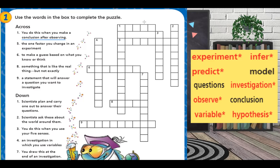Let me draw an arrow for you. Over here. Can you see? From the left to the right. This is a cross, and when I say down, this is down from up to down. Number one, Fatima — you do this when you make a conclusion after observing. What do you do? Infer. Excellent. You infer.